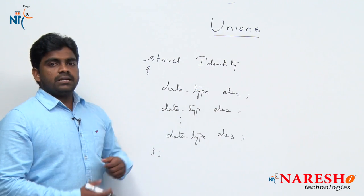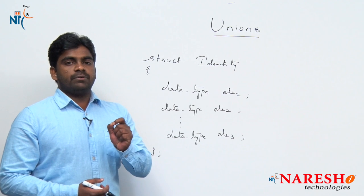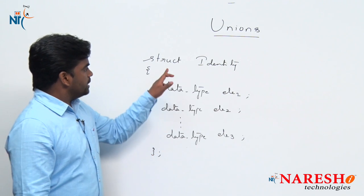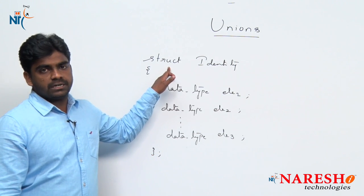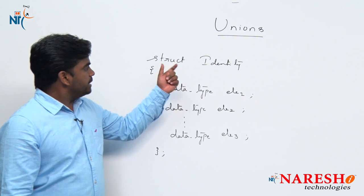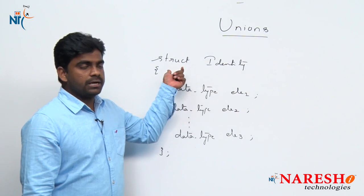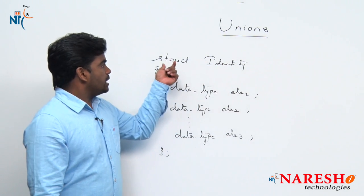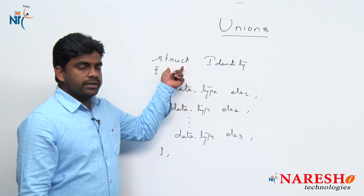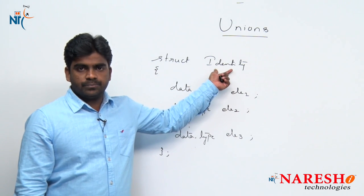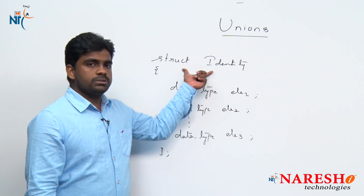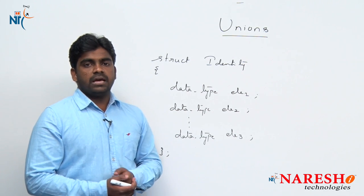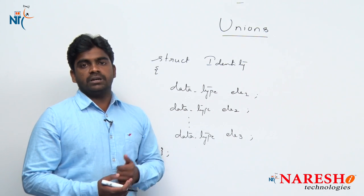Generally, primitive data types have only one word, but in case of user-defined data types, we need to consider two words: struct and its identity. We cannot simply use struct alone and we cannot use identity alone — combinedly we have to use two words. How to solve this problem? With the help of typedef declarations.